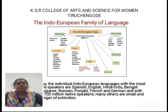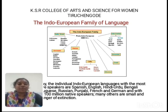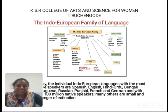The next topic is the Indo-European language family. A group of languages which have some common characters among them is called a family of languages. There are many families of languages, for example the Greek family, Latin family, Indian family, Iranian family, American family, and the Germanic family.